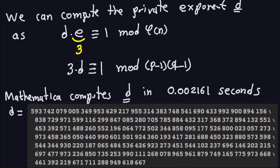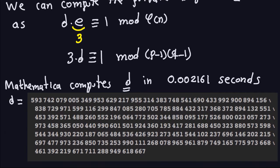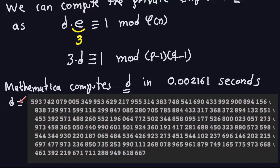So I'm gonna do this in Mathematica because it's a little bit easier. So Mathematica is gonna compute for me this d, which is basically just solving this modular equation, and it gives me this huge private exponent, and it takes this many seconds, which is of course a very short time.